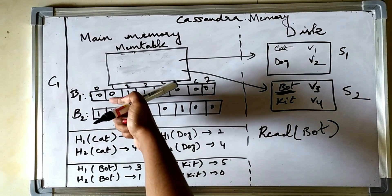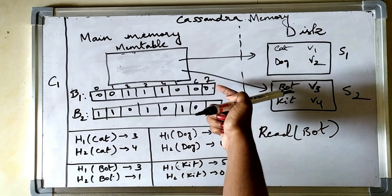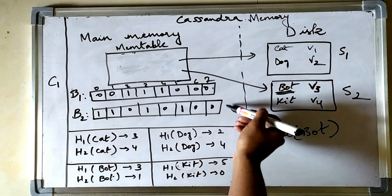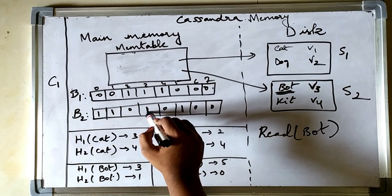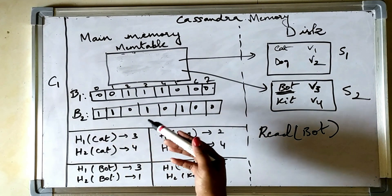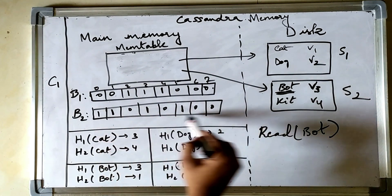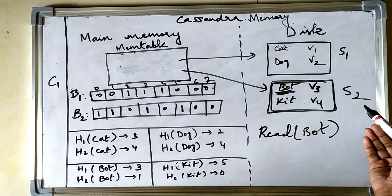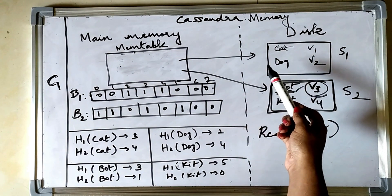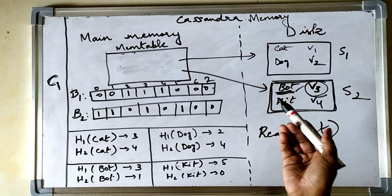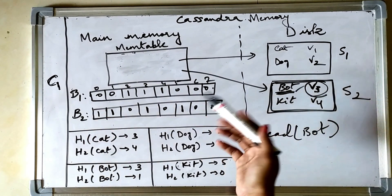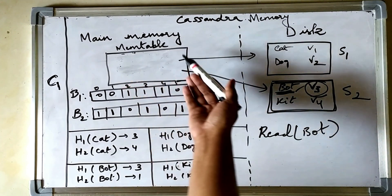Bloom filter bit 3 for SS table 1 is 1, but bit 1 is 0, which indicates that 'bot' is not present in SS table 1 — so we skip that disk read entirely. Next we check the bloom filter for SS table 2: bit 3 is 1 and bit 1 is also 1, meaning there is a high probability that 'bot' is present in SS table 2. So we go to disk, read SS table 2, find 'bot', get value v3, and return it to the client. We avoided an unnecessary I/O call to SS table 1 using minimal memory — a fixed-length bit array — with O(1) time complexity from main memory.